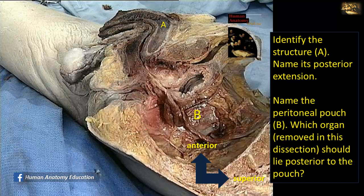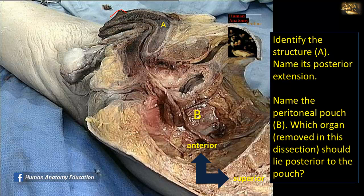Identify structure A and name its posterior extension. Structure A is the body of the penis — specifically the corpus cavernosum on the dorsal aspect of the penis. You can see the tunica albuginea surrounding it, the thick whitish fibrous tissue. Posteriorly, it extends as the crus of the penis at the root, within the superficial perineal pouch. Anteriorly, it ends blindly and is capped by the glans of the penis.